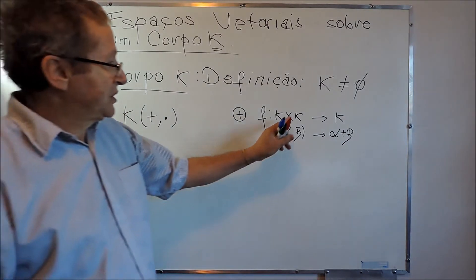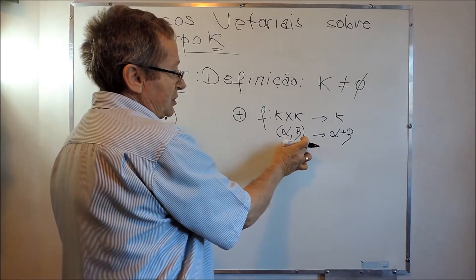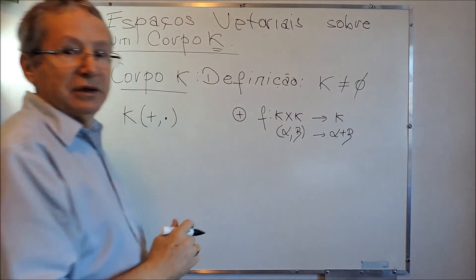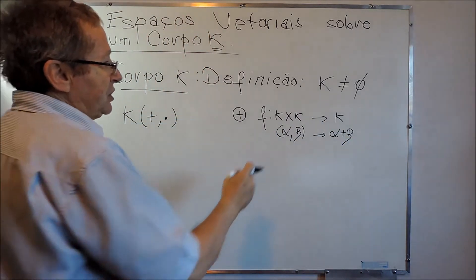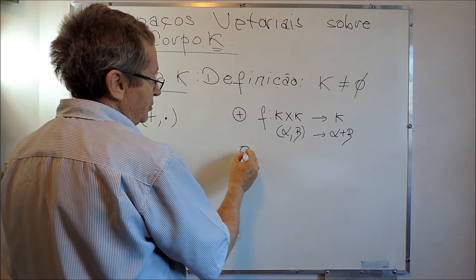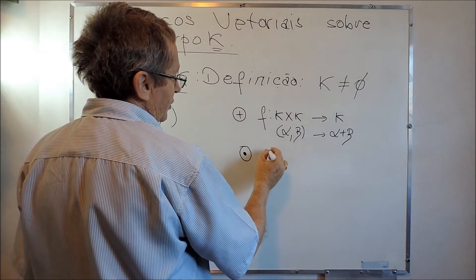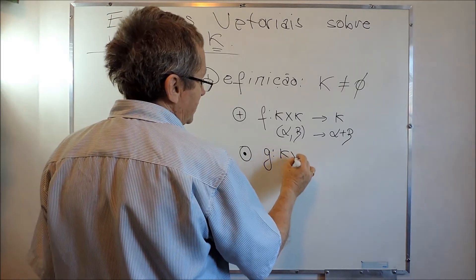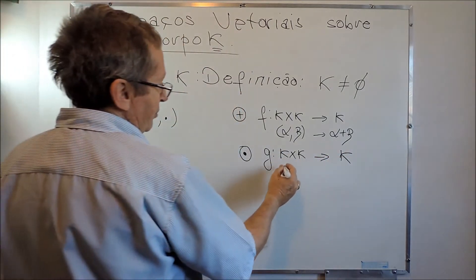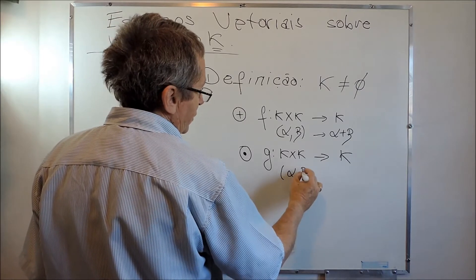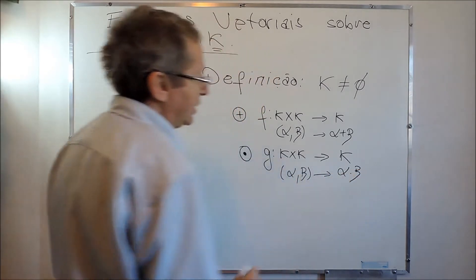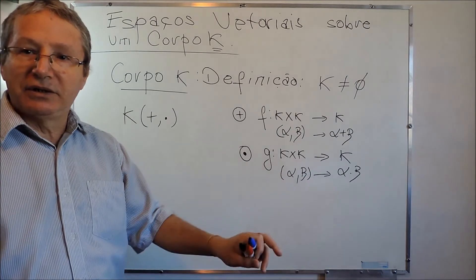A gente diz que isso é uma lei de composição interna porque elementos somados em K resultam em outro elemento, alfa mais beta, que também está em K. Então K é fechado com respeito à operação de adição. A outra operação, a multiplicação, também vai do produto cartesiano de K por K em K, pegando alfa e beta e levando em alfa vezes beta. Também é uma lei de composição interna dentro de K.